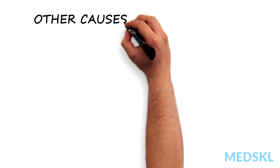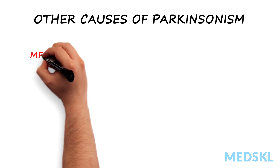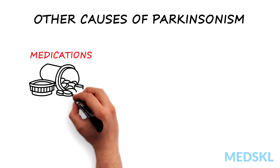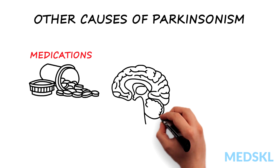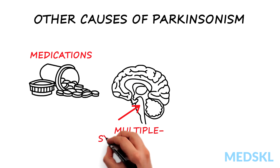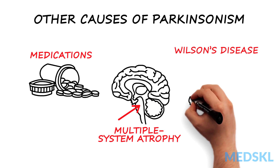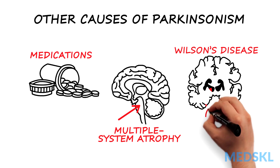It is important to keep in mind that PD is the most common form of Parkinsonism, but patients may develop Parkinsonism from other causes, including medications such as antipsychotics, other degenerative disorders such as multiple system atrophy or progressive supranuclear palsy, and Wilson's disease, which causes copper deposition in the basal ganglia.